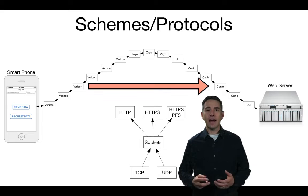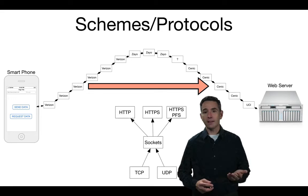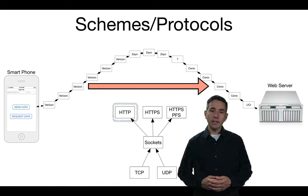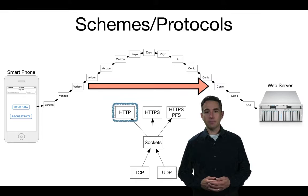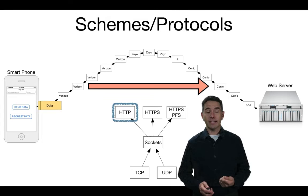Each URL also has a scheme or protocol that describes how the data is formulated along the way. We've talked about HTTP and HTTPS — both protocols that the client (smartphone) and the server must both use. If we're communicating via HTTP, there's an agreement about how data is passed to the web server, and the data is like a postcard: any of the information in the packet being passed along can be read by any of the computers along the way, just like any postman could read the back of a postcard.